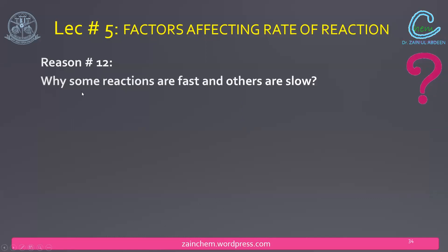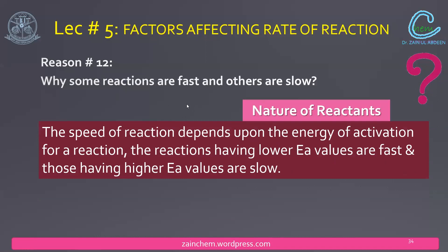The next question: why are some reactions fast and others slow? The answer is the nature of the reactants — it is their inherent trait. Some reactants have higher activation energy, and if their activation energy is high, the reaction will be slow. If the activation energy is less, the reaction will be fast. These are all the reasons discussed.